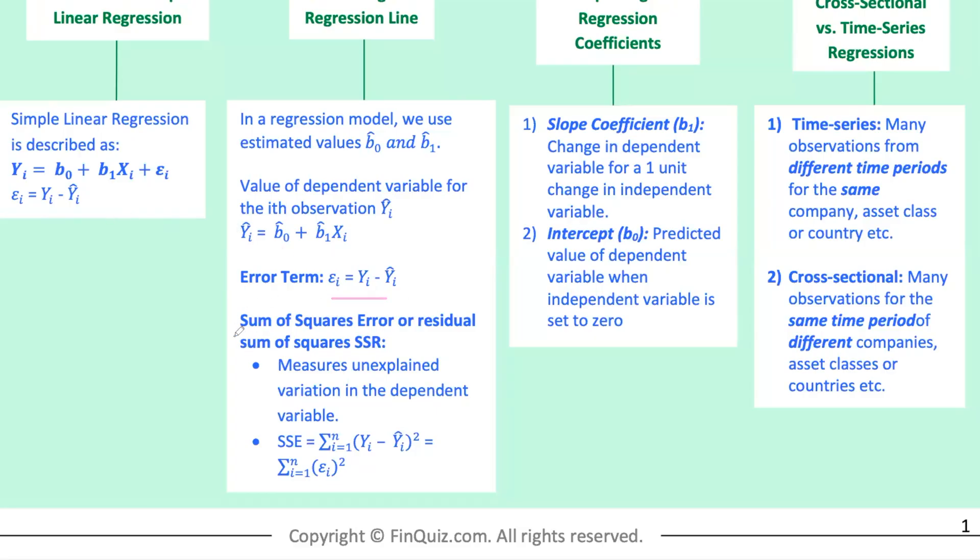Understanding the coefficients is crucial. The slope coefficient B1 tells us how much y changes for a one unit change in x. If B1 is positive, y and x move in the same direction. If negative, they move in opposite directions. Intercept B not is the predicted value of y when x is zero. Sometimes this makes sense, like in some economic models, and sometimes it doesn't.